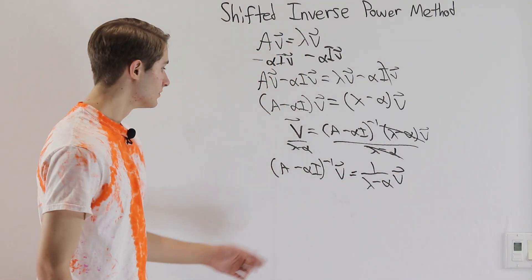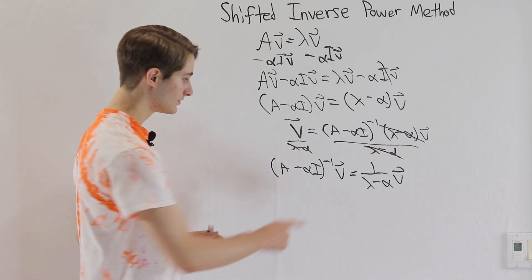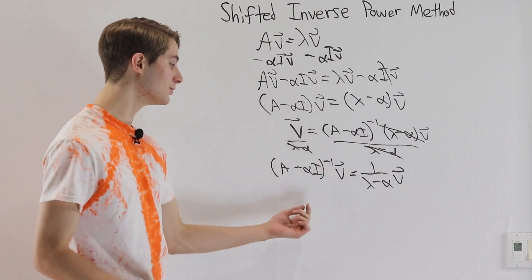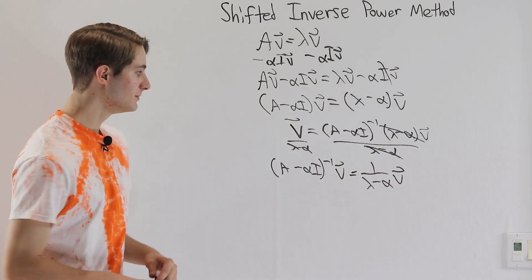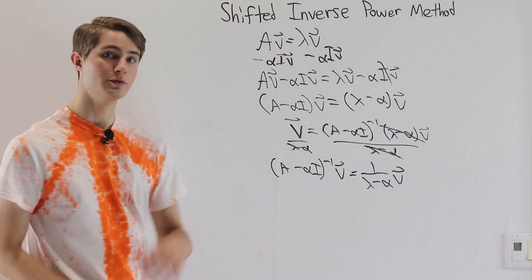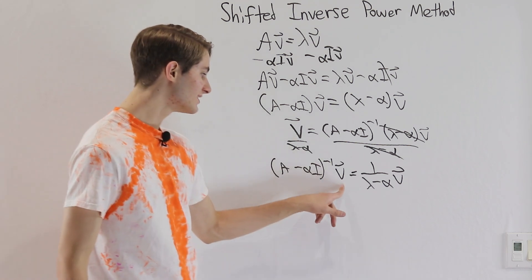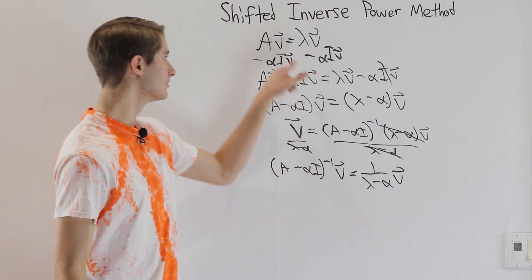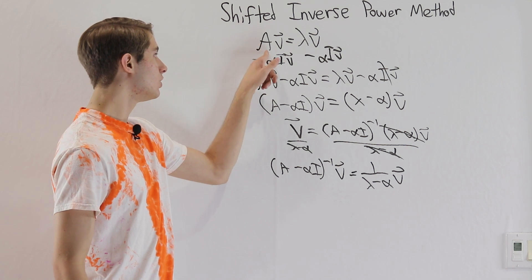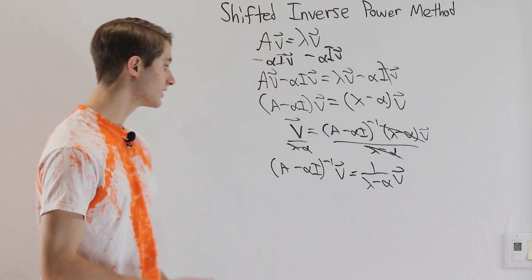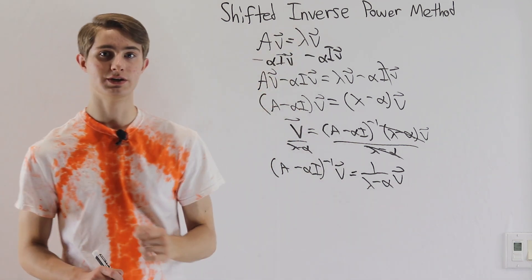This equation is actually one form of the definition of an eigenvector and eigenvalue. The matrix (A minus alpha I) inverse, when multiplied by v, has the same effect as scaling v by 1 over (lambda minus alpha). So v is an eigenvector of this new matrix with eigenvalue 1 over (lambda minus alpha). Importantly, v is also an eigenvector of the original matrix A, so we can use 1 over (lambda minus alpha) to solve back for the eigenvalue of the original matrix.